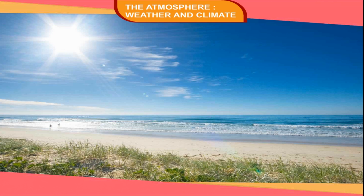In the temperate zone, the sun's rays never fall vertically — they are always oblique. This zone is neither too hot nor too cold. The frigid zone lies to the north of the Arctic Circle in the Northern Hemisphere and to the south of the Antarctic Circle in the Southern Hemisphere. Here, the sun's rays are very slanting, so this zone receives a very low amount of heat and is a very cold part of the earth.